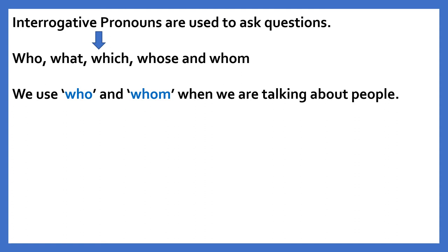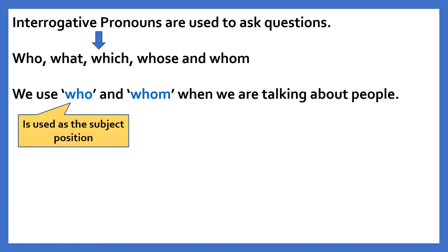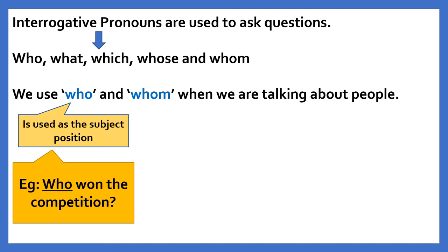Interrogative pronouns are used to ask questions. Words such as who, what, which, whom and whose are all examples of interrogative pronouns. We use who and whom when we are talking about people. Who is used in the subject position. For example, in this sentence: Who won the competition? Here the interrogative pronoun 'who' is used as the subject.